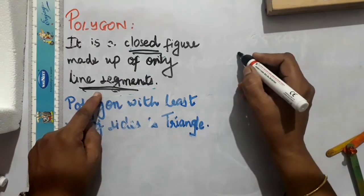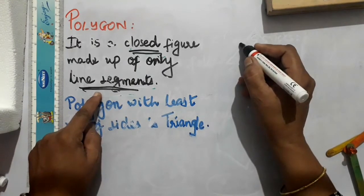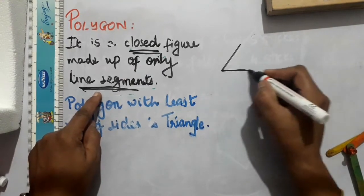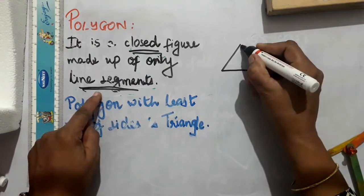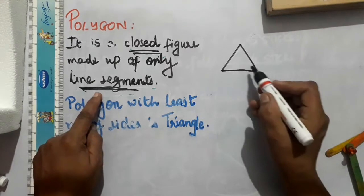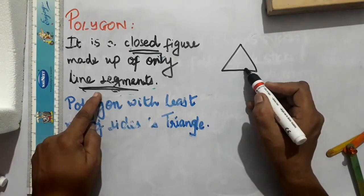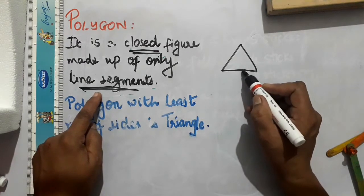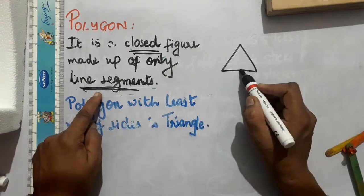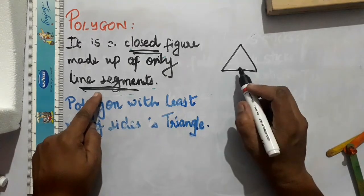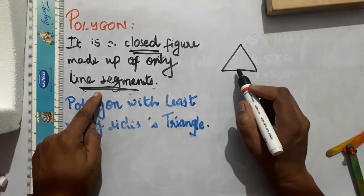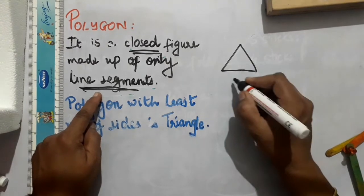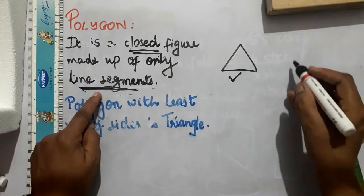So if you want to identify whether a given figure is a polygon or not, you need to check: is it a closed figure, and is it made up of only line segments? If I draw this figure, check whether it is a closed figure — yes. Is it made up of only line segments — yes. Both conditions are satisfied, so this is a polygon.